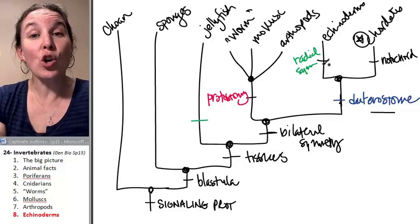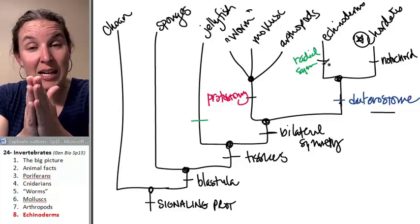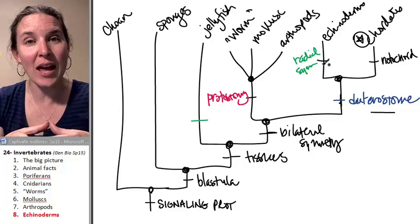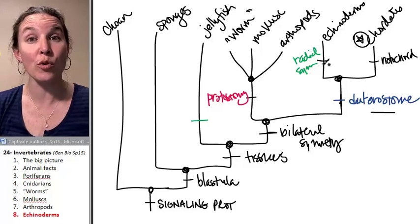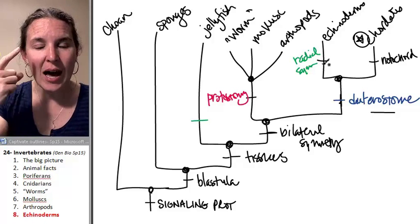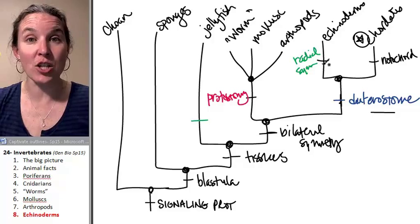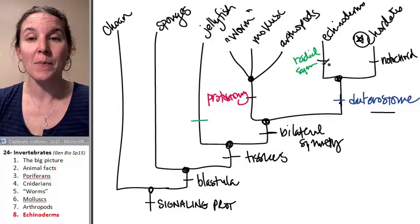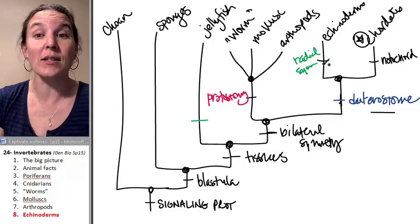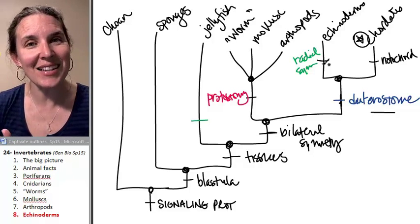We could group jellies and echinoderms together because they're all radially symmetric, and that might be a way that we would group them if we didn't know better. But knowing about their embryology, knowing about their development, and other characteristics of complexity and organ structure, that tells us that no—